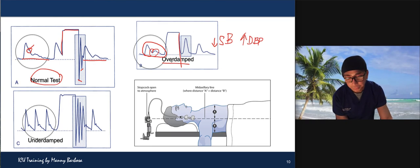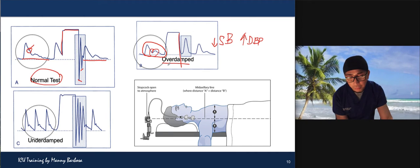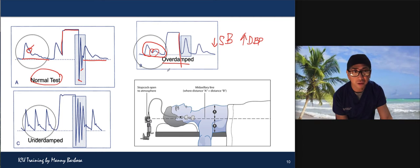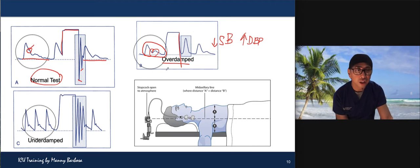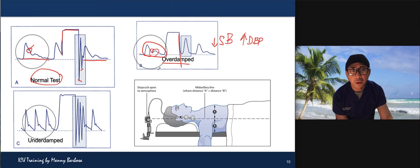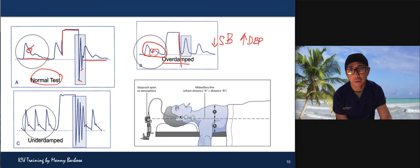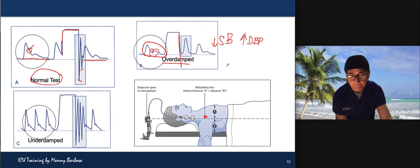How can you fix an overdamped system? Check your line for any blood clots — since you may have just used it for a blood draw, there might be blood left in the catheter, so flush or aspirate it. Check for air bubbles, which may be sitting in the transducer — flush it out, open to air. Also use shorter monitoring tubing; especially if the tubing is coiled and excessively long, get rid of it. The shorter the tubing, the more accurate the pressure reading.